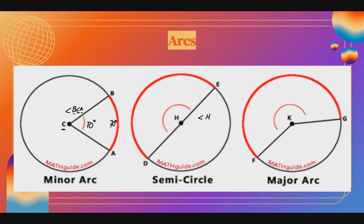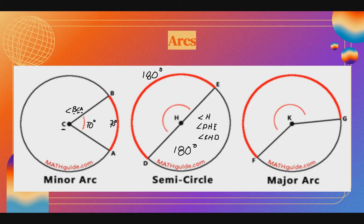So here we have this angle. We can call it angle H, or angle DHE, or angle EHD. The semicircle arc here — since the full circle is 360 degrees, half is 180 degrees. So this arc is 180 degrees, and the measure of this angle is also 180 degrees. Now for the major arc — angle FKG — if its measure is 240 degrees, then this angle here is 240 degrees as well. Equal, equal lang.